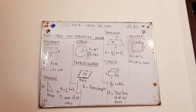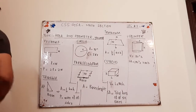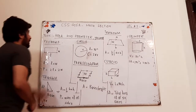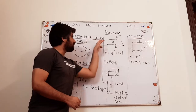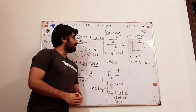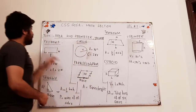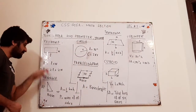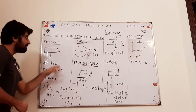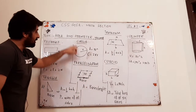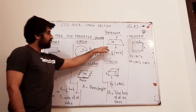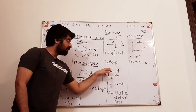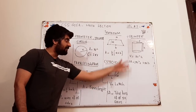In this video, I am going to discuss about area, perimeter and volume of rectangle, triangle, circle, parallelogram, trapezium, cuboid and cylinder.